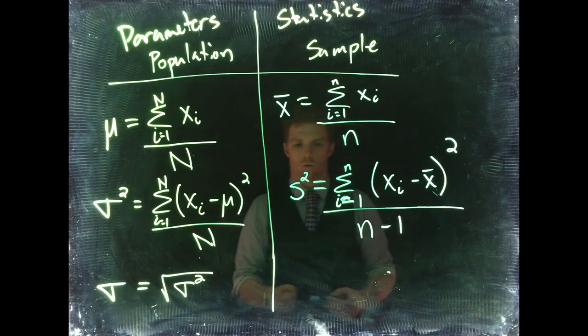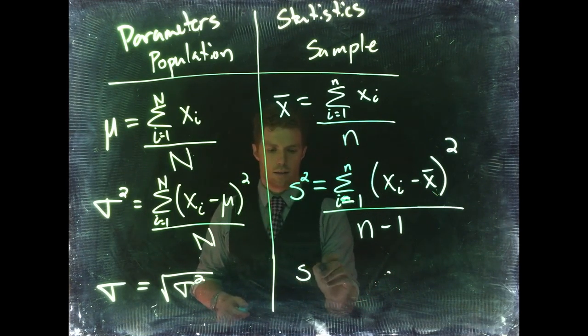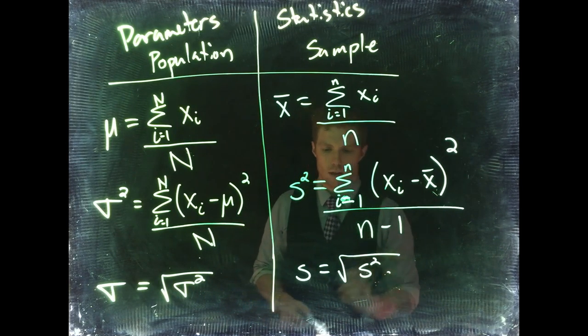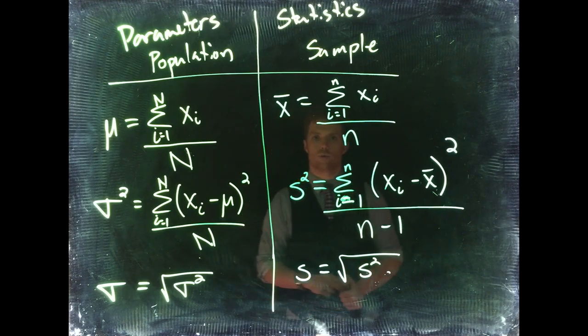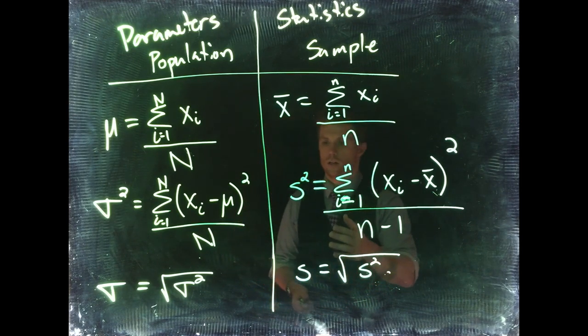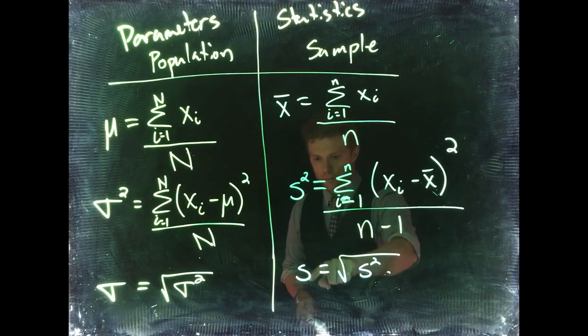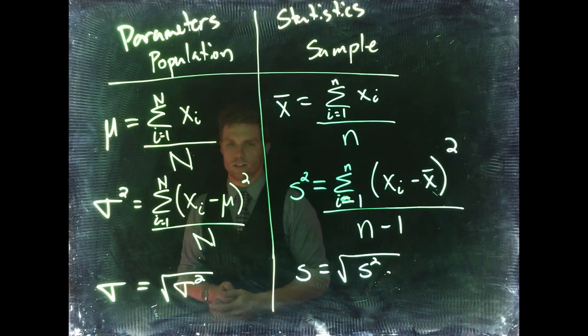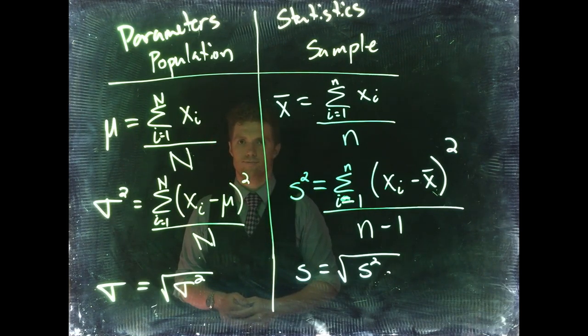If we want to know the standard deviation, we don't have much hard work left — we literally just take the square root of our variance. The square root gives you your standard deviation. The same concept applies for the sample: the sample standard deviation equals the square root of the sample variance. Going back and forth between variance and standard deviation is very simple: to get standard deviation from variance, take the square root; if you have the standard deviation and want the variance, just square it.